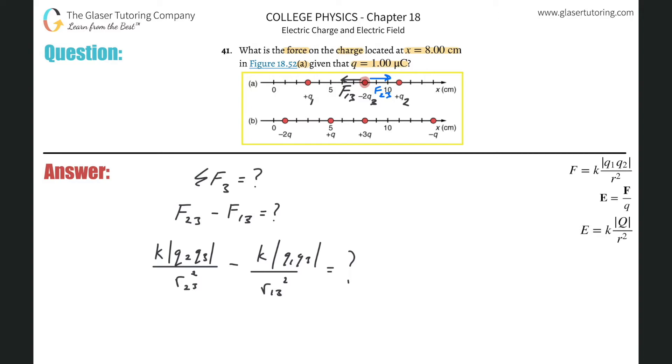And now basically what we need to do is just plug everything in. So k is going to be 8.99 times 10 to the ninth. Q2, what is it? Well, it said it's just q, but remember they told you what q is up here. It's 1 microcoulomb, but you know we need that in coulombs, so that's 1 times 10 to the minus 6. Times then q3. What's q3? Well, it's going to be negative, but remember we're taking the absolute value, so who cares? Don't even bother plugging in the negative sign. It's going to be 2 times q. So that's going to be 2 times 10 to the minus 6.